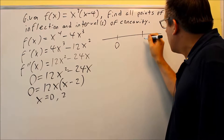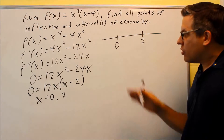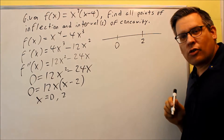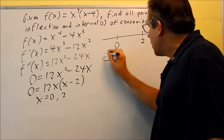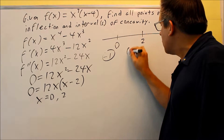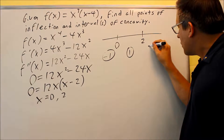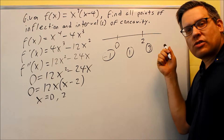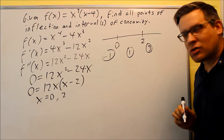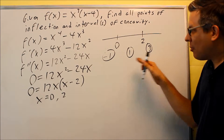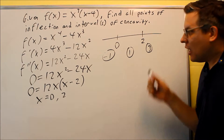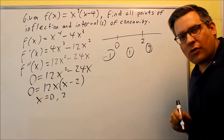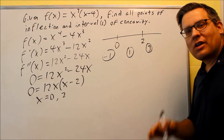Let's put a number line with 0 and 2, and we're going to do test points. It's a very similar process to what you did with the first derivative, but now we're going to use the second derivative when we put our test points in. We can pick negative 1, 1 between 0 and 2, and 3. You can use any point as long as they fall inside each of the intervals — I'm just picking easy numbers close to my endpoints.